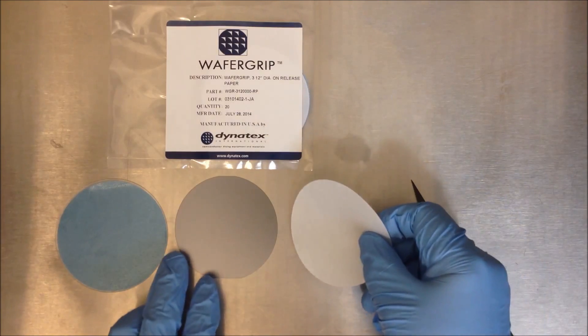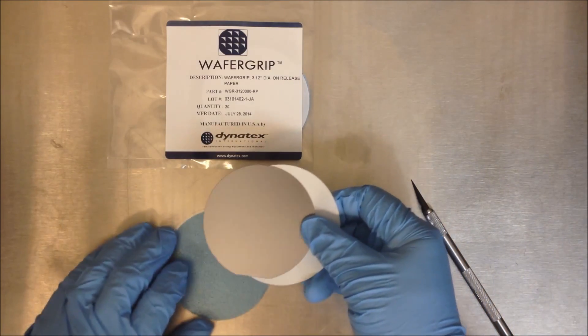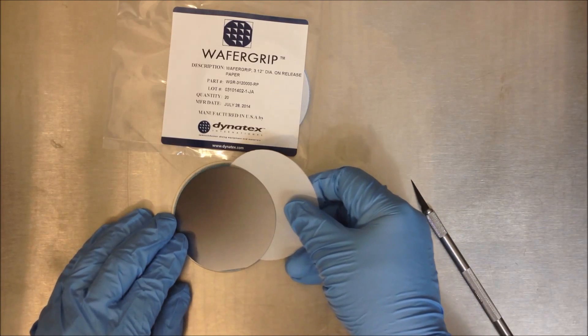Then take the wafer cradle ease the wafer and place it centered onto the wafer grip.